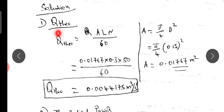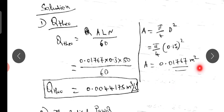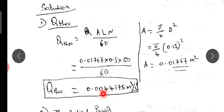Theoretical discharge: since this is a single-acting reciprocating pump, the formula is Q = A × L × N / 60. The area of the cylinder is (π/4) × d² = 0.01767 m². Substituting values, the theoretical discharge comes to 0.0044175 m³/s.